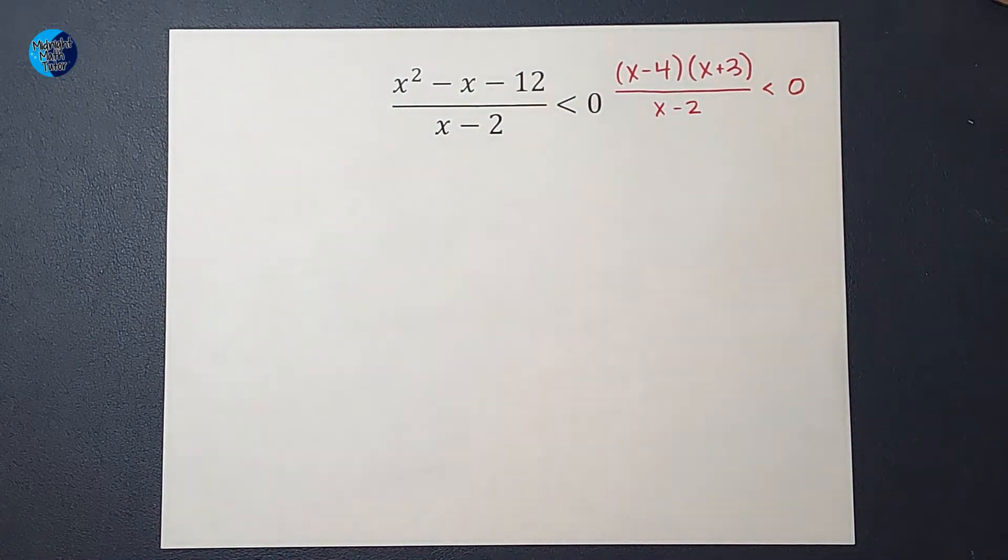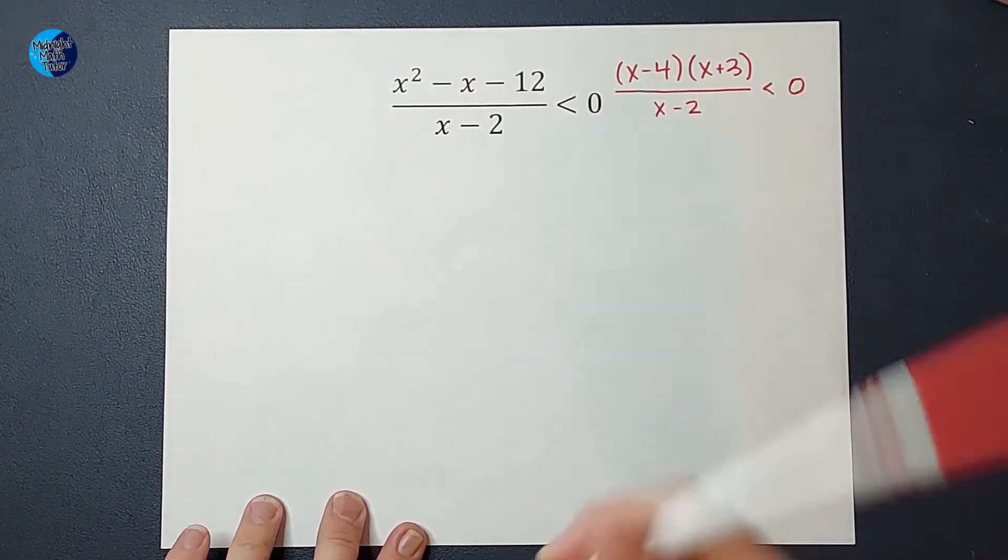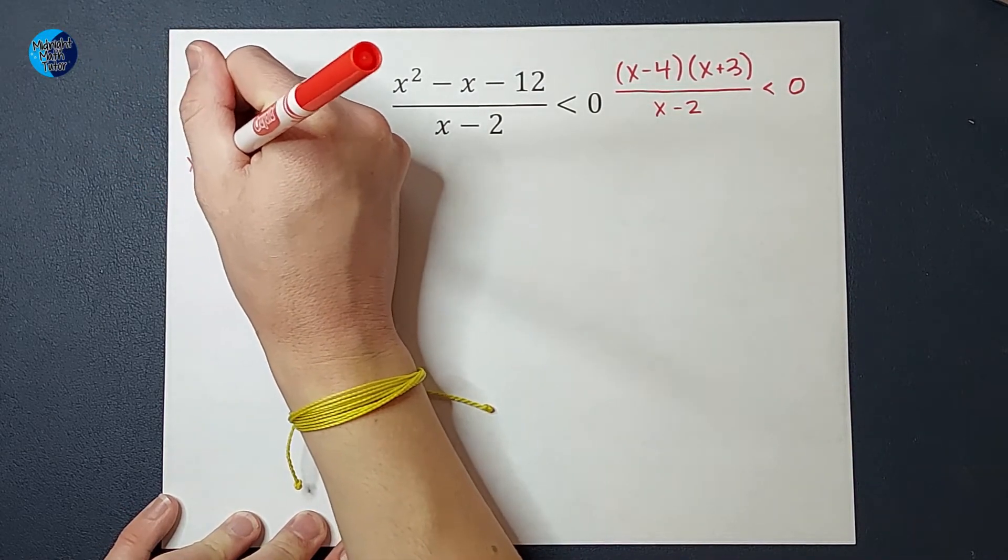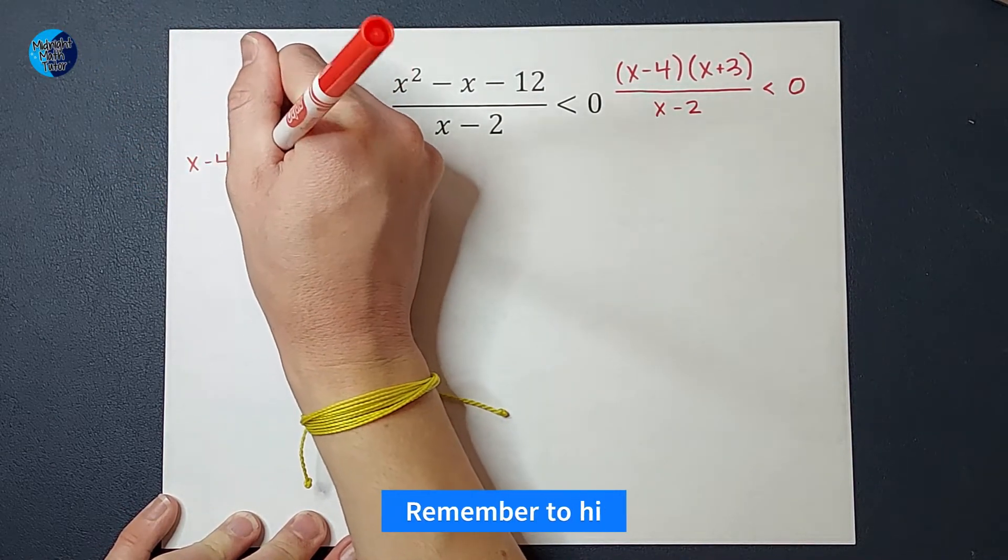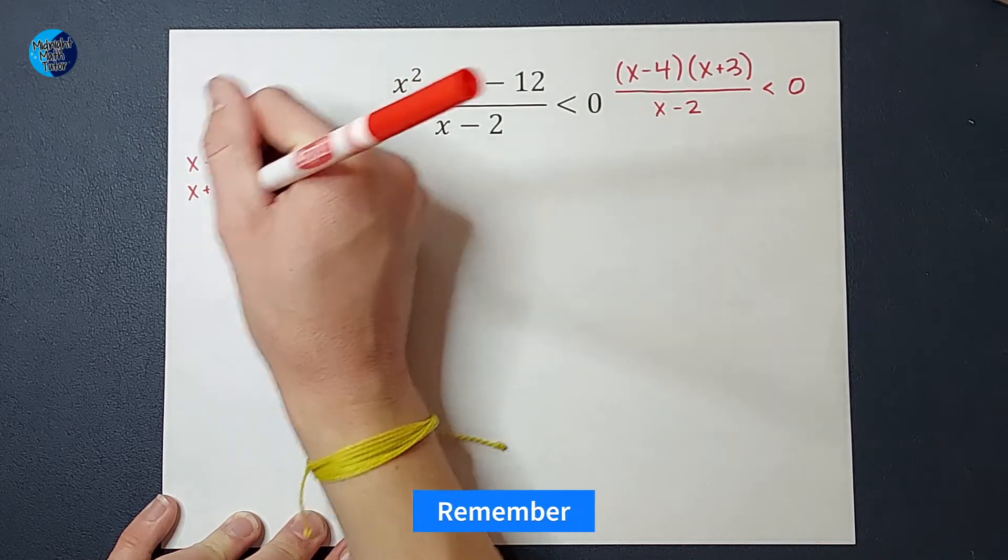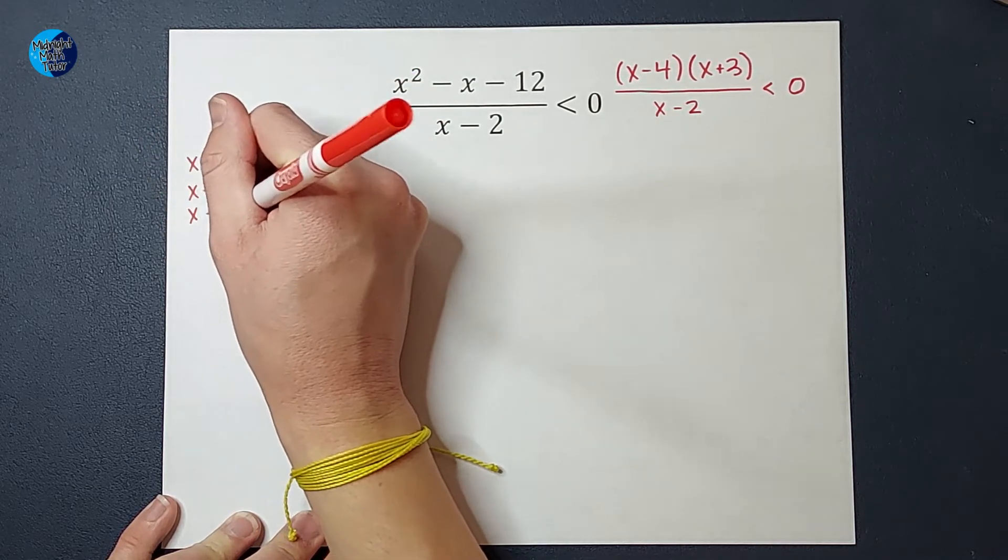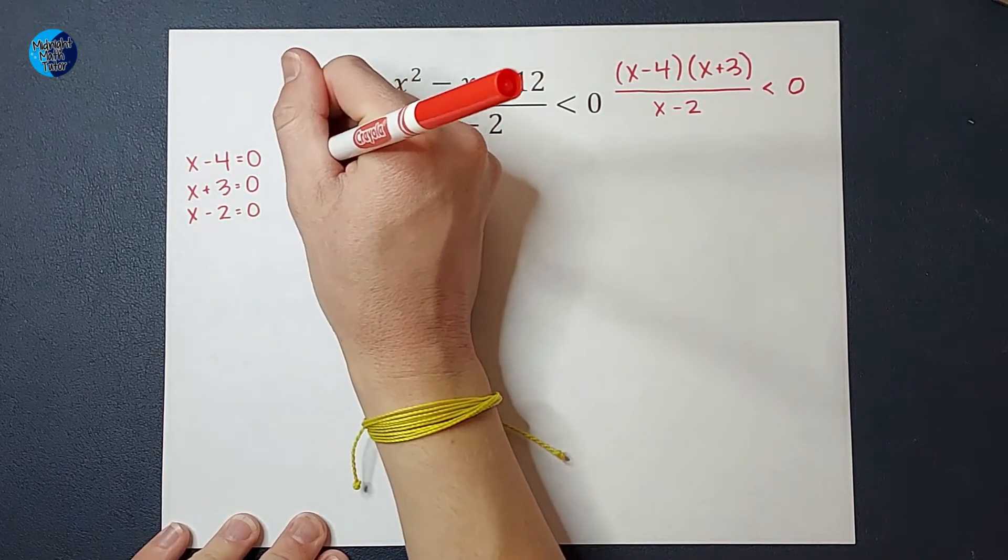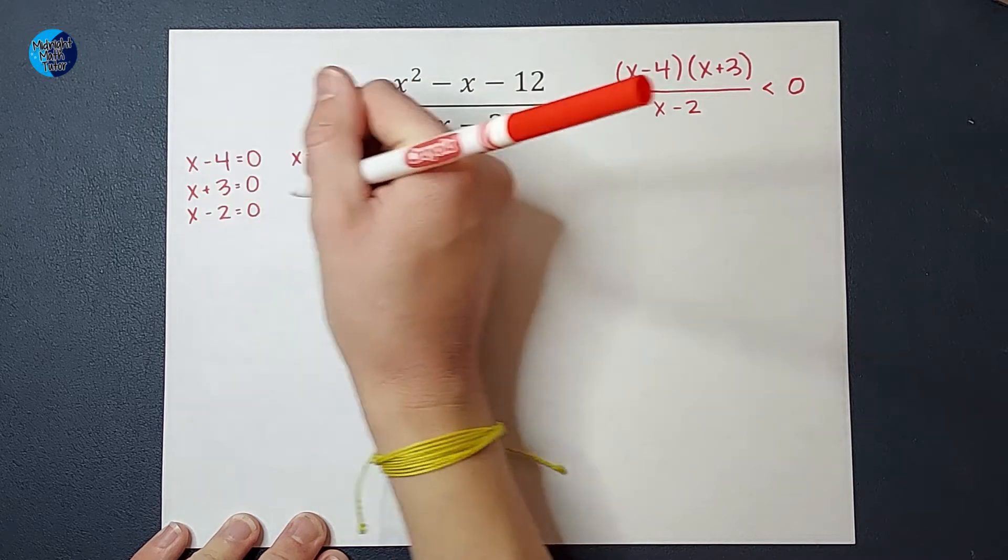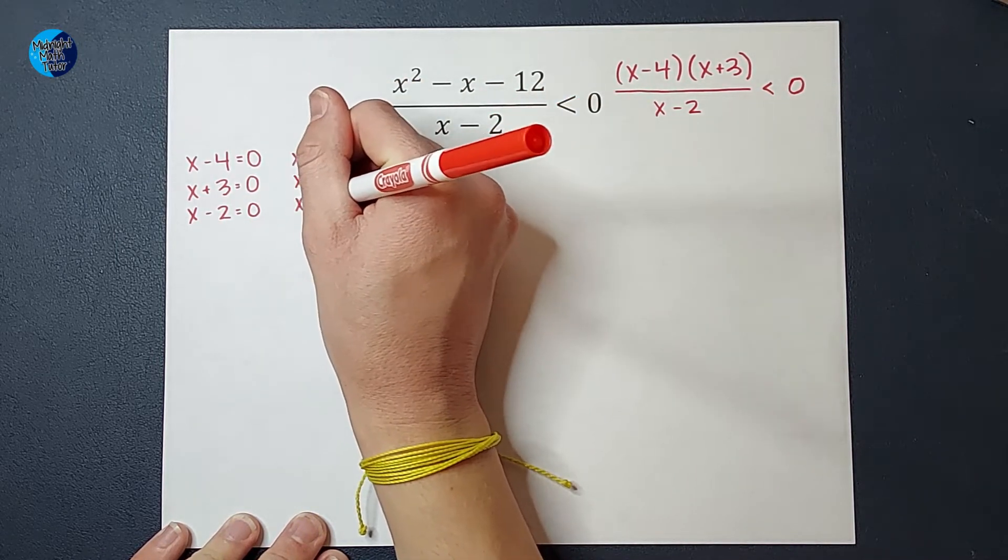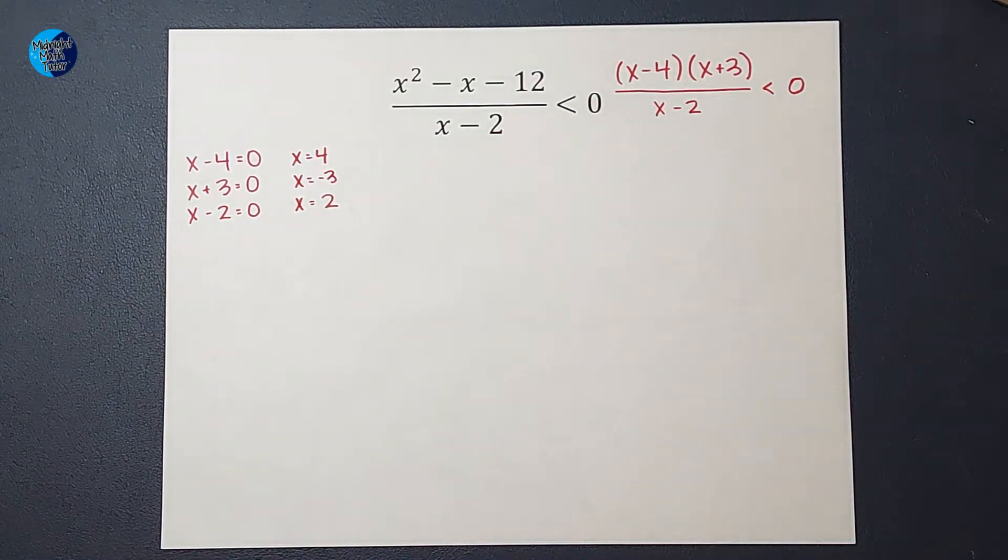The next thing I'm going to do is set each of these equal to zero. So I'm going to have x - 4 = 0, x + 3 = 0, and x - 2 = 0. Add four to both sides, get x = 4, subtract three from both sides, get x = -3, and add two to both sides to get x = 2.